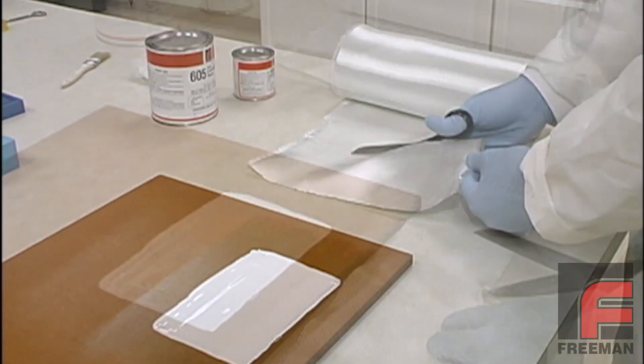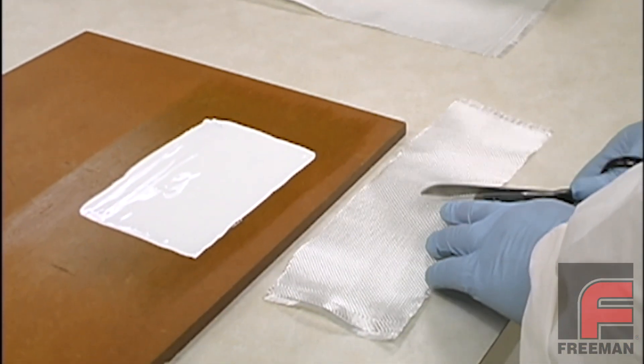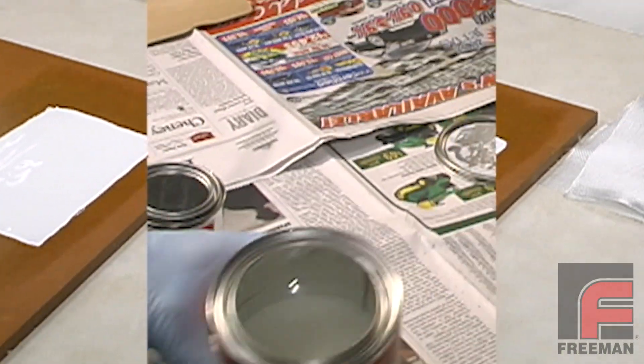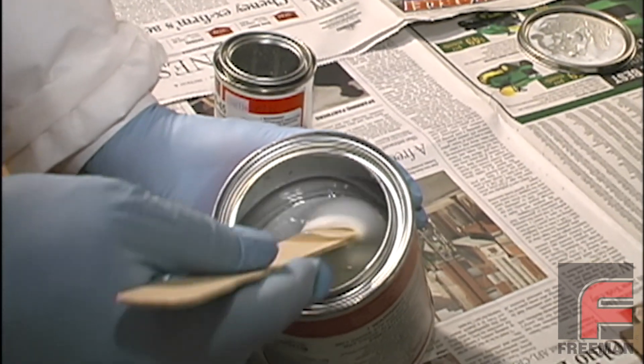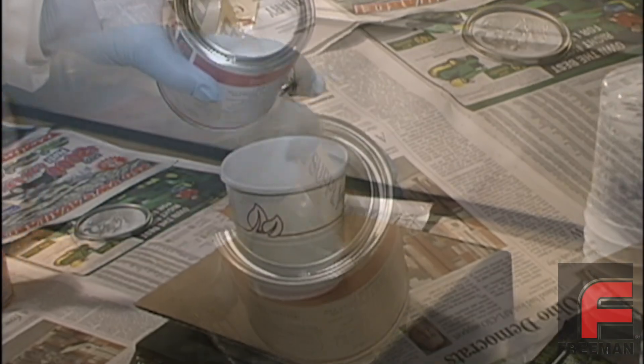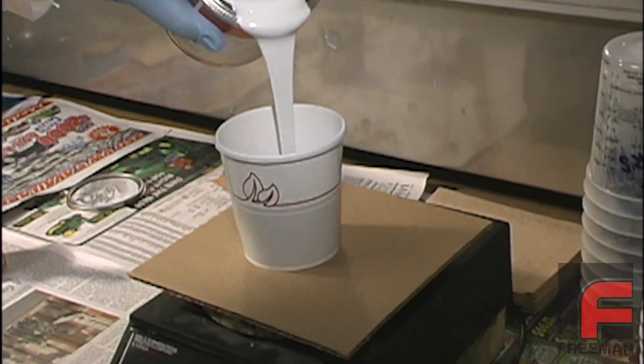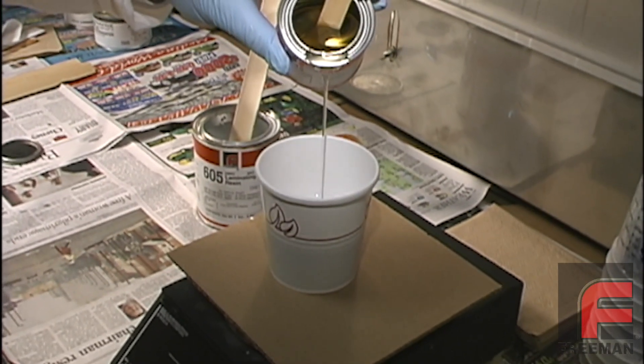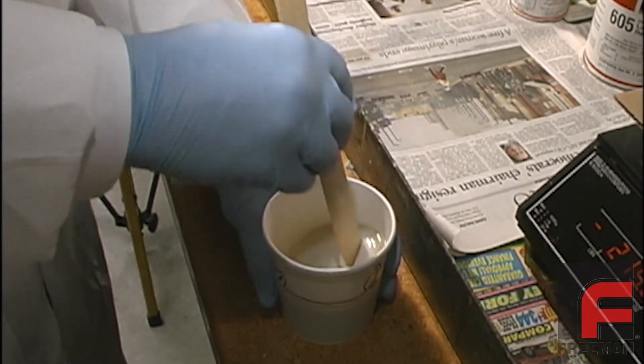Before applying the laminating resin, we cut our fiberglass cloth to the correct width and length using standard scissors. Of course, we also need to mix our laminating resin. Since this is an uneven ratio material, we followed that procedure. For more information, please refer to our other videos on weighing and mixing materials.